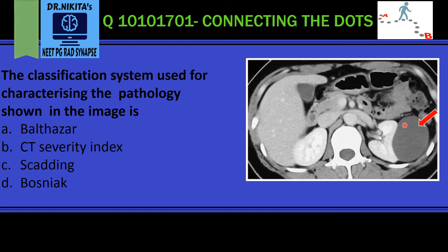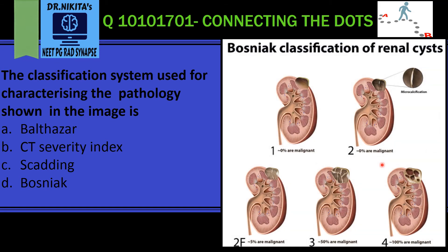This hypodense lesion in the left kidney is a cyst. So we have been asked the classification system for renal cysts, and that is the Bosniak classification, which classifies renal cysts into 5 categories. With increasing category, the risk of malignancy increases.